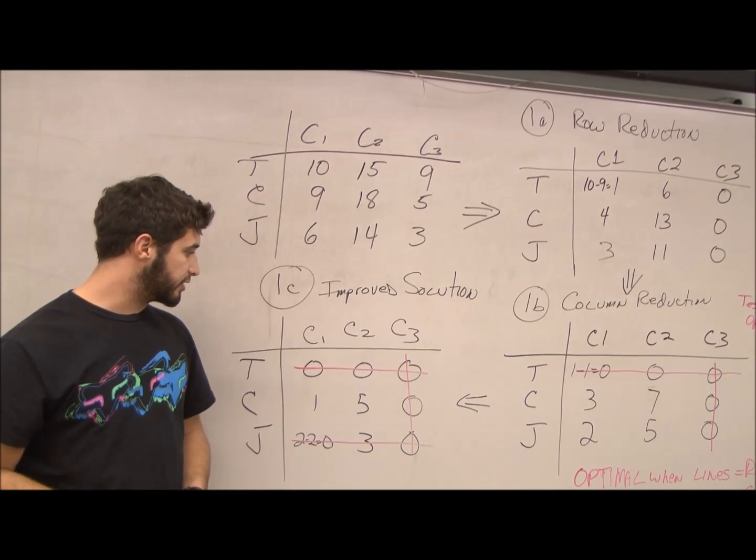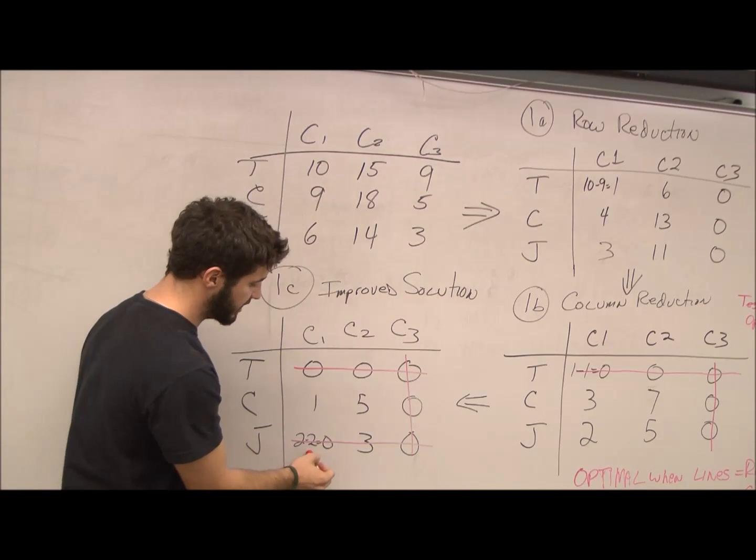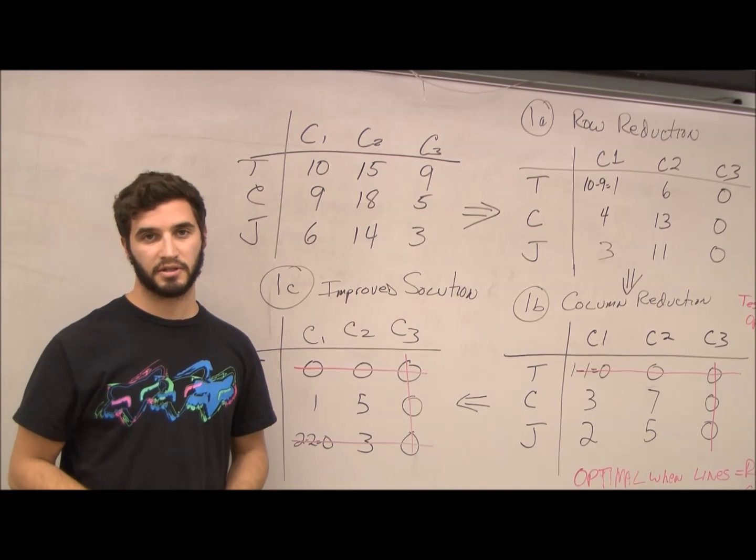So after our improved solution, there are now three lines in the table equaling the amount of rows and columns, meaning that our equation is indeed optimal.